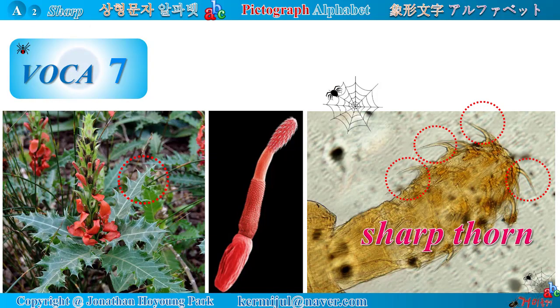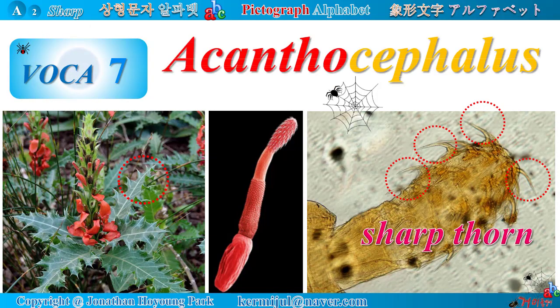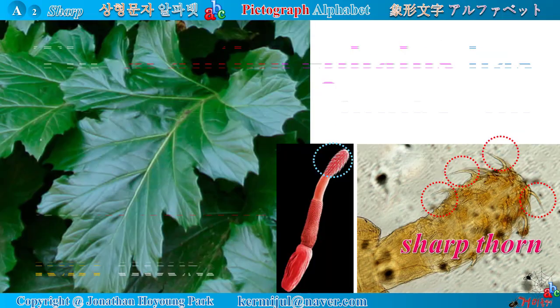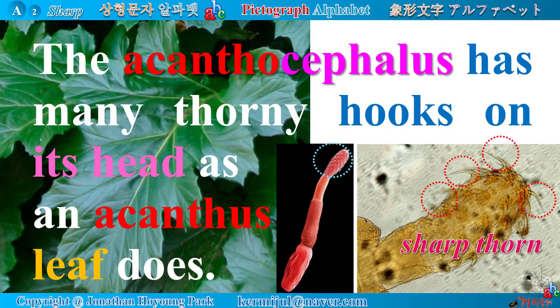Vocabulary Number 7: Acanthocephalus. The acanthocephalus has many thorny hooks on its head, as an acanthus leaf does.